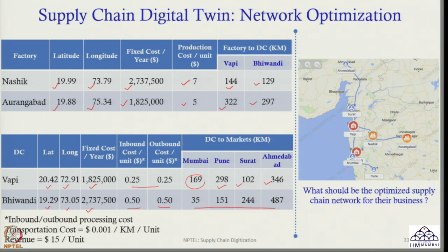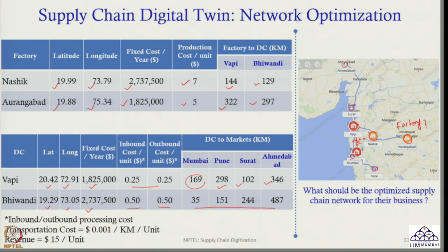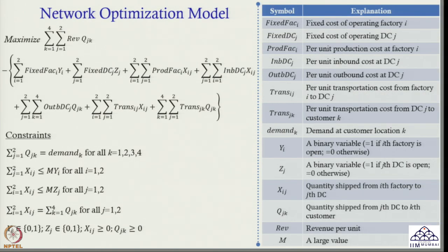We have two factories — one located in Aurangabad, one located in Nasik. We have two prospective distribution centres — one is Vapi, another one is Vivandi — and we have the location of the customers. I need to find out where should they locate the factory, where should they locate the distribution centre, and how the movement of products will happen from factory to DC and DC to customer centres. With that objective in mind, we developed an optimization model.